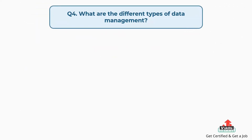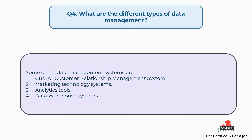Question number four: what are the different types of data management? The answer is, some of the data management systems are: first, CRM or Customer Relationship Management system; second, marketing technology systems; third, analytics tools; and fourth, data warehouse systems.